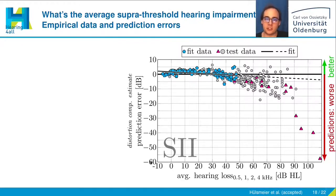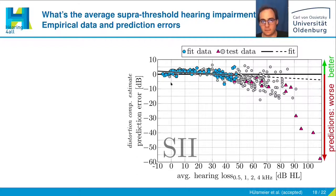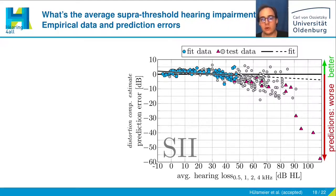If you depict the prediction errors on the y-axis across the average hearing loss — our estimated distortion component — you can see this pattern for the SII. For low average hearing losses the SII performs well, which is as expected. For slightly higher hearing losses, the SII predicts too low SRTs, but as the average hearing loss increases, the predictions get worse — higher SRTs are predicted than actually measured.